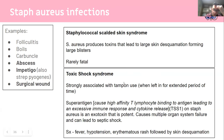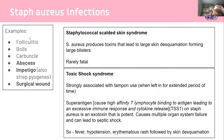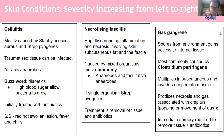Strep pyogenes infections include impetigo - which was mentioned twice, so it's important - and erysipelas, a dermal lymphatic clearly demarcated area of erythema. More systemic and high-yield infections include scarlet fever, caused by a pyrogenic exotoxin leading to a strawberry tongue - a classic buzzword. If you see a strawberry tongue, think scarlet fever. Toxic shock syndrome via the pyrogen superantigen leads to multi-shock. These infections are often treatable with penicillin.